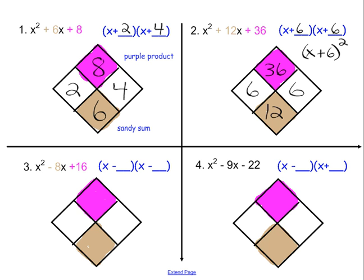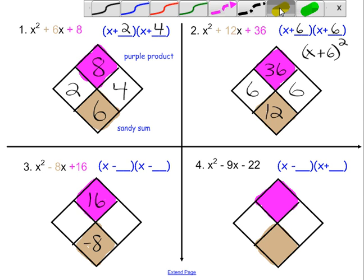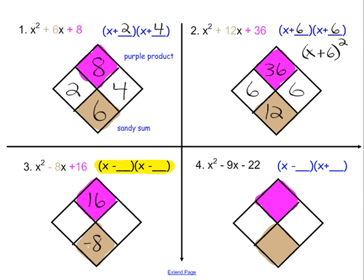Number 3, our purple product is 16 and our sandy sum is negative 8. I do want to emphasize on this particular problem that I noticed right away the sign on the purple product was positive and the sandy sum in the middle was negative. So I am going to need two negative numbers in this case, which is going to help us as we think of the numbers that will fit into this particular scheme. So we have two numbers that multiply to positive 16 that add up to negative 8.